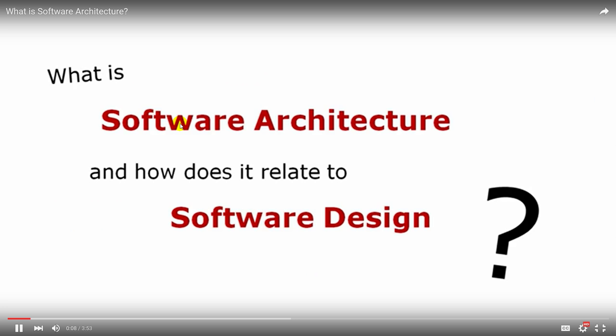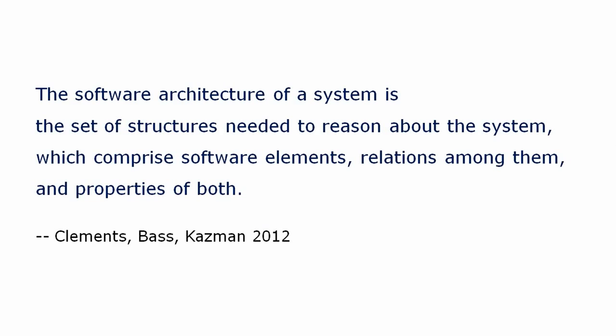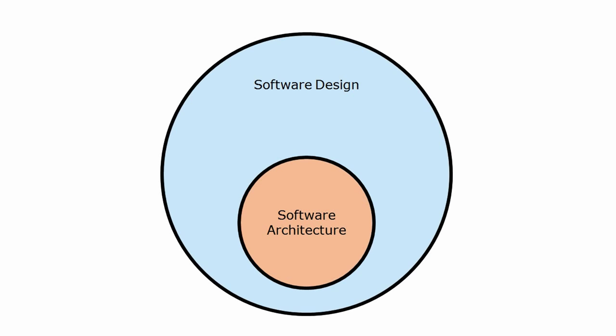So what is software architecture exactly? Let's look at what it is and how it relates to software design. This definition from the Software Engineering Institute is great, but we will need some background information before it makes sense. Everyone agrees that software architecture is a kind of software design. Software design is all the details of the completed software. Architecture details are a subset. But how can we tell if a detail is architectural?